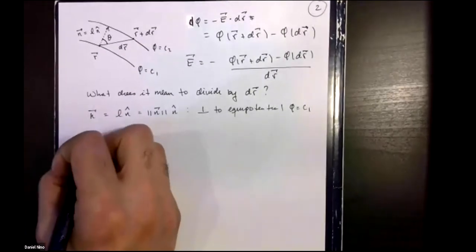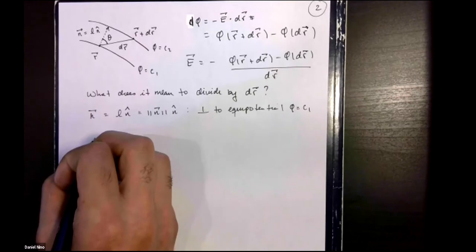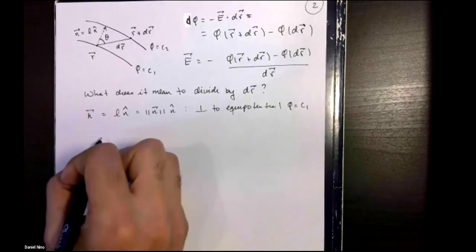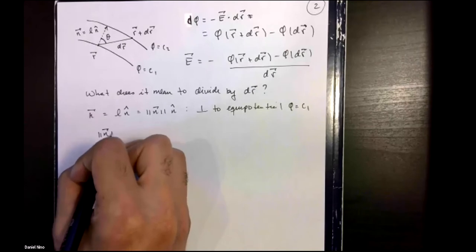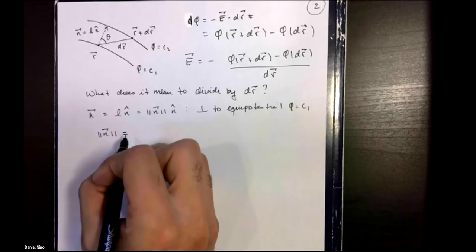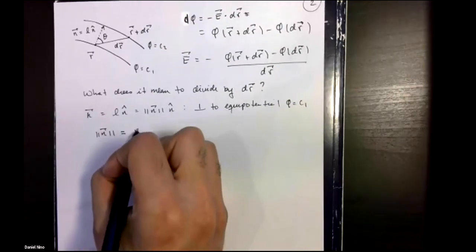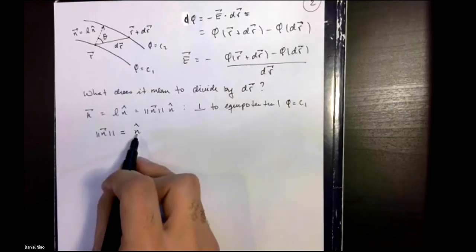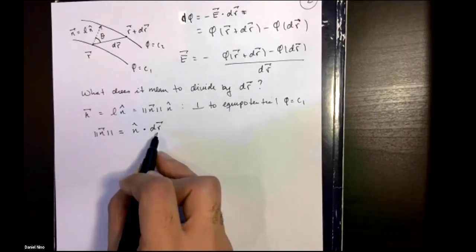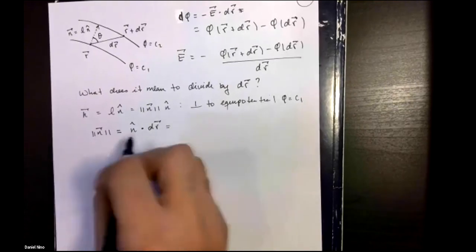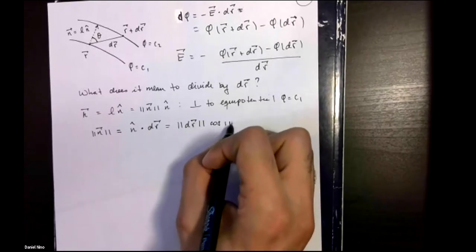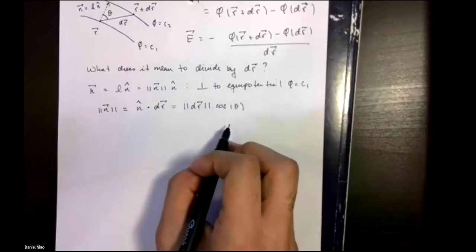Without loss of generality, this vector makes an angle theta with our original trajectory dr. That means we can also express the magnitude of our vector as the dot product of the unit normal and the differential path element of our original trajectory. Because n-hat has norm one, we're just left with the norm of our original trajectory times the cosine of theta, by the definition of the dot product.